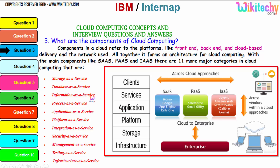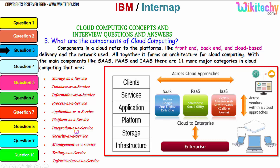There are 11 major categories in cloud: storage as a service, database as a service, information as a service, process as a service, application, platform, integration, security, management, testing, and finally infrastructure. These are all additional services associated with the three major services that together form cloud computing.